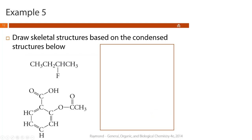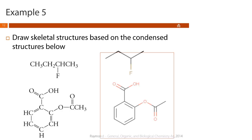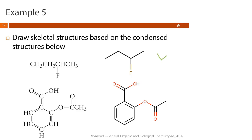Let's draw skeletal structures from condensed structures. The first molecule is 2-fluorobutane and the second is something we'll work with in lab later this semester. You should have drawn something similar to the examples shown. There are multiple valid ways to draw these — for instance, rotating 2-fluorobutane gives an equally correct structure. The second molecule is aspirin, and there are many ways to rotate and represent it in two dimensions.